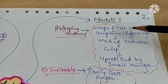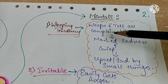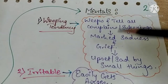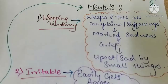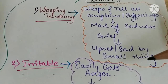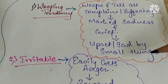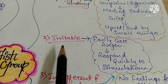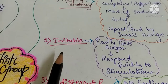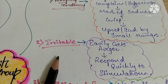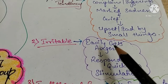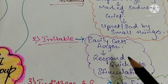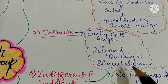Mentals: There is a weeping tendency — females weep while telling their complaints or sufferings. There is marked sadness with grief; the patient is very upset and sad about very small things. Irritability is also a very marked symptom — they get easily angry and irritable by small things and respond very quickly to stimuli.